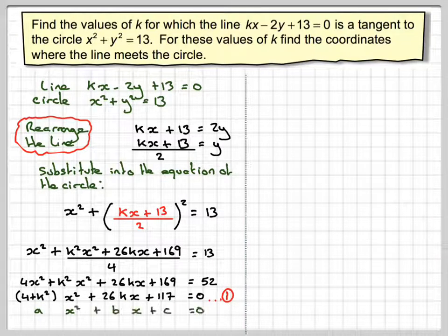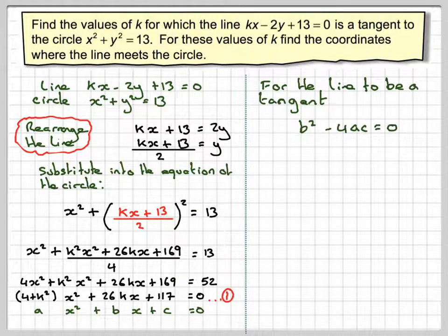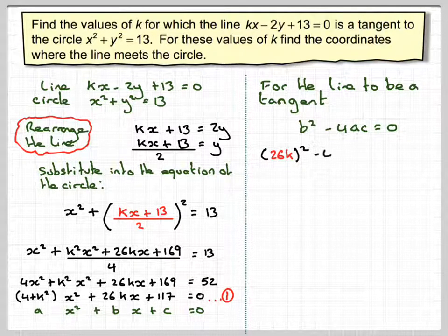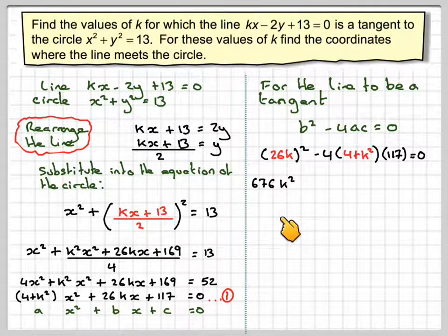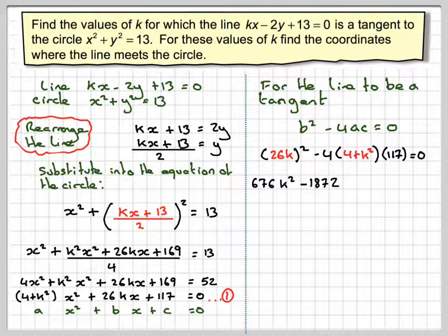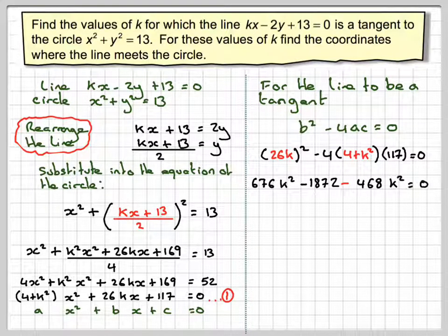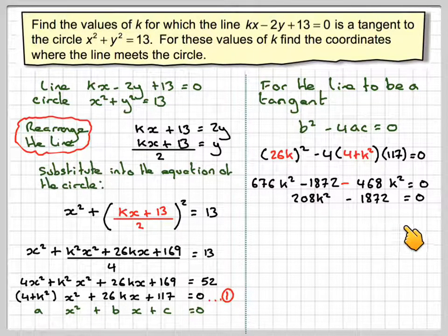Now, looking at the discriminant of that equation — we have ax squared plus bx plus c — for the line to be a tangent, b squared minus 4ac equals 0. So b is 26k. We form an equation in k: (26k) squared minus 4 times (4 plus k squared) times 117 equals 0. Squaring gives 676k squared minus 4 times 4 times 117, which is 1872, minus 4 times k squared times 117 gives 468k squared. That still equals 0. Collecting terms gives 208k squared minus 1872 equals 0.